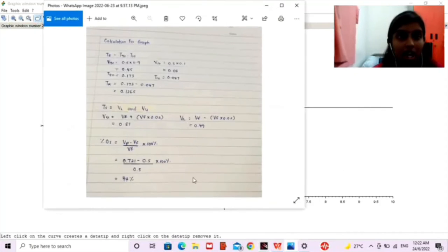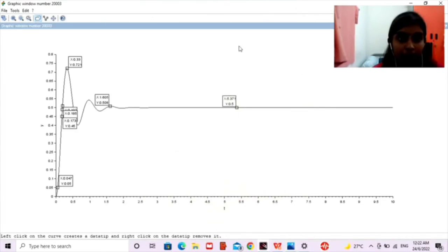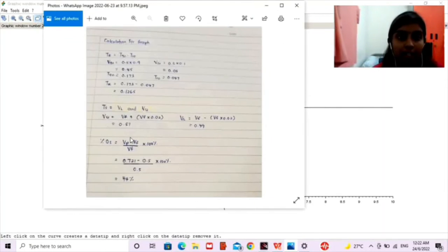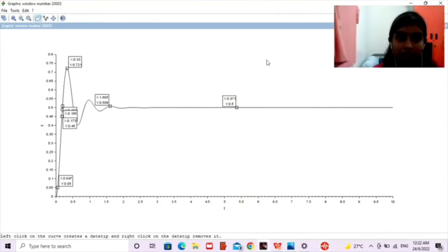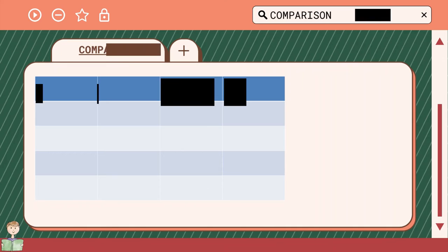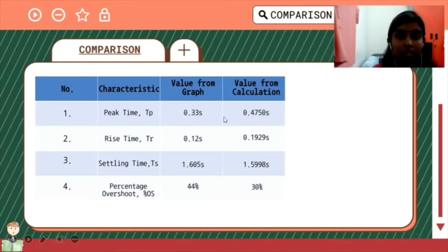As for overshoot percentage, the formula is peak value minus final value over final value times 100%. So the peak value is 0.71 and final value is 0.5. When we calculate this we got 44%. This is the comparison from the value of graph and value from calculation. There is a slight difference from both the values.